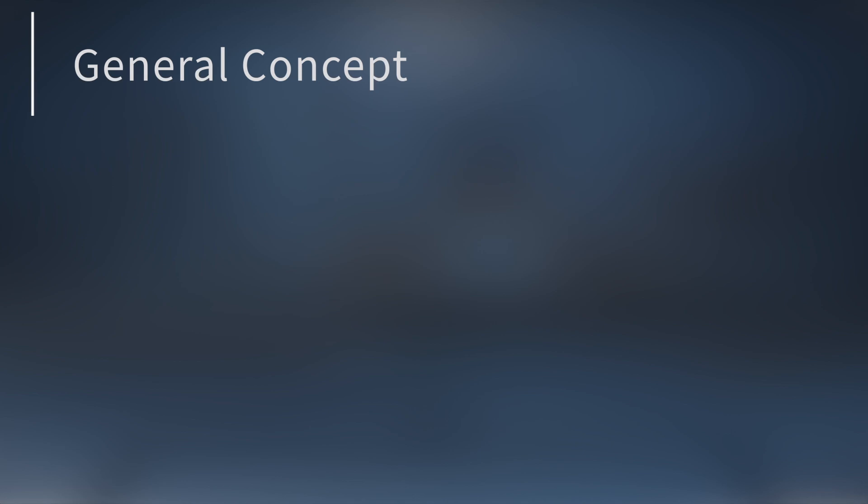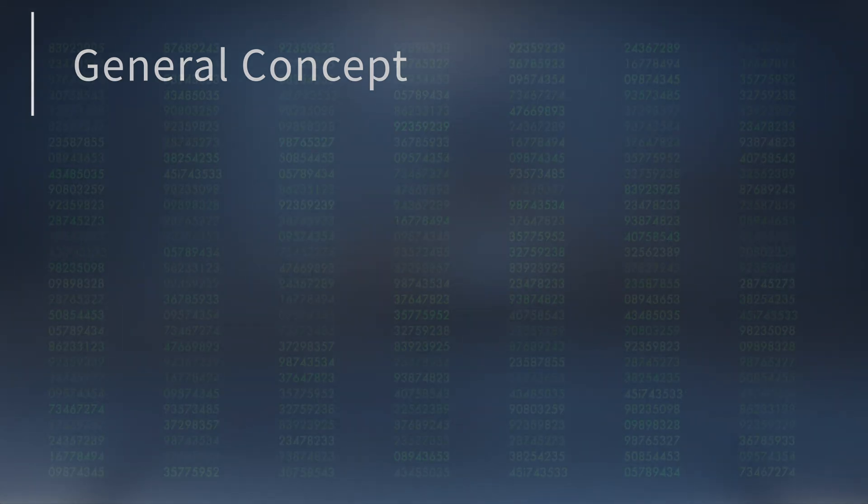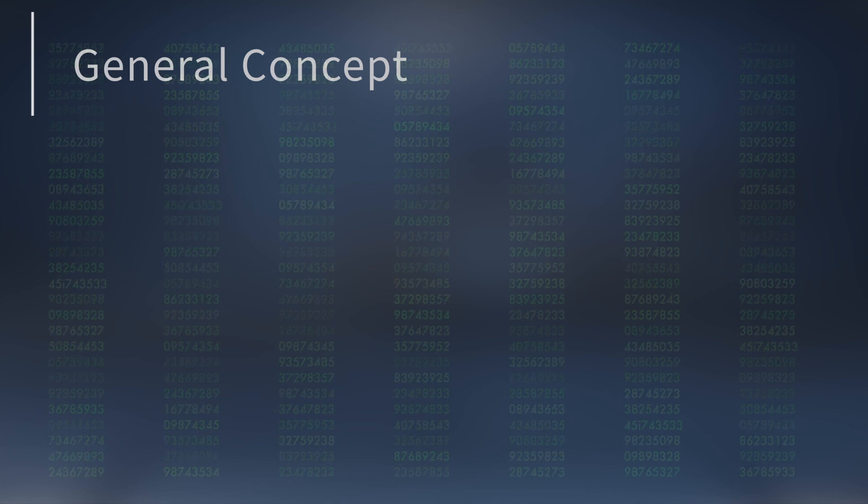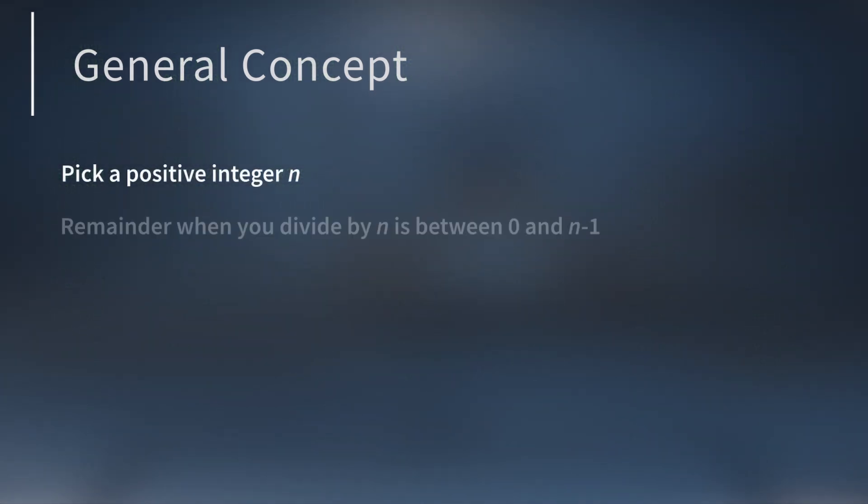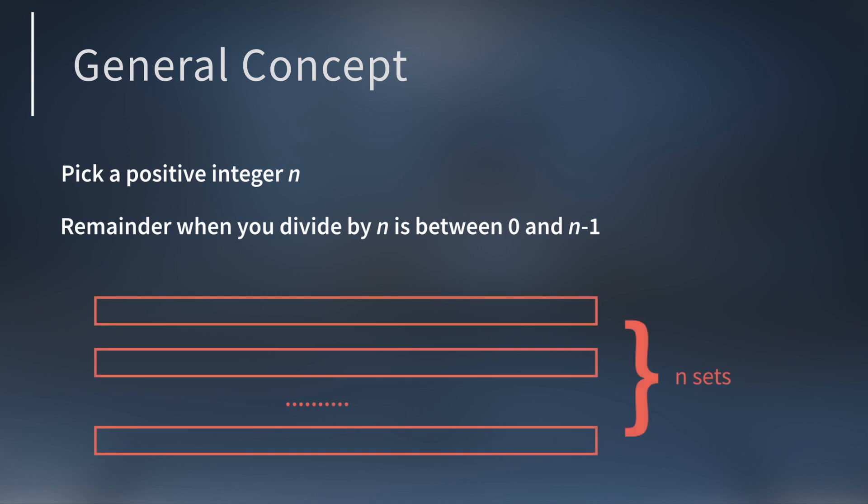So far we focused on the number 7 as a way to motivate the idea of congruences. But now it's time to talk about congruences and modular arithmetic in a more general sense. Let's take all of the integers and look at the remainders when you divide by a positive integer N. Each integer will have a remainder between 0 and N-1 when you divide by N.